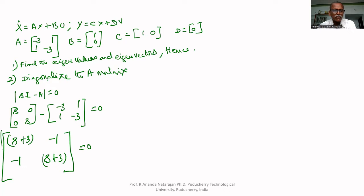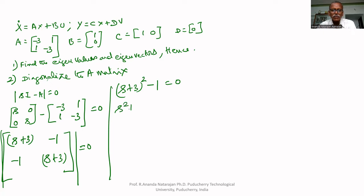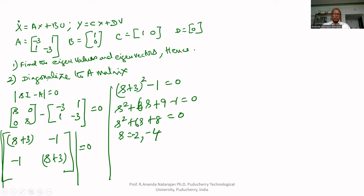The determinant of this matrix equals (s plus 3) squared minus 1, equal to zero. That gives s squared plus 6s plus 9 minus 1 equal to zero, so s squared plus 6s plus 8 equal to zero. The roots are s equal to minus 2 and minus 4.